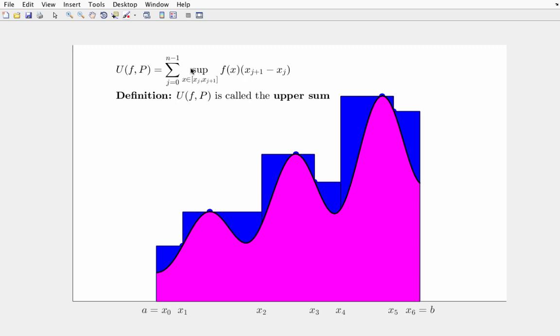Now, by the way, just a quick refresher on what supremum means. Supremum is the least upper bound of all upper bounds. It's the smallest one. Now, if f is continuous, as this function happens to be, we could replace supremum with maximum. Just to refresh your memory of why that is,